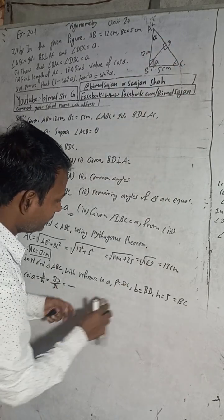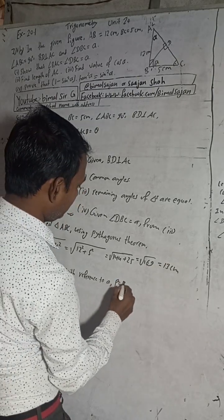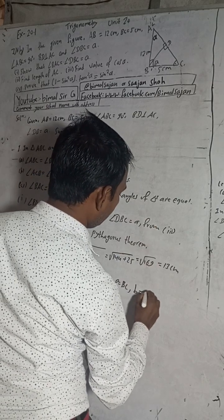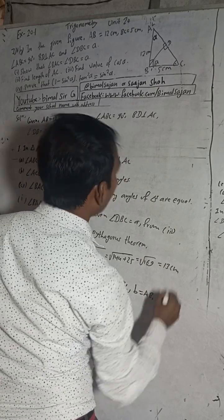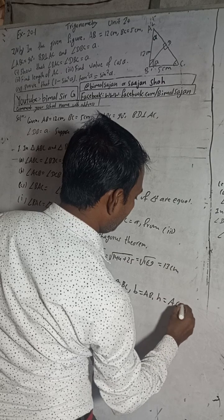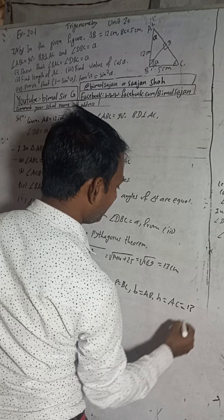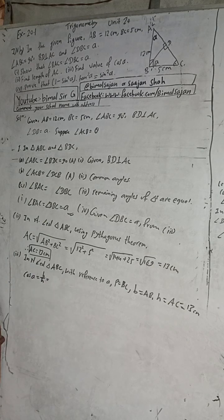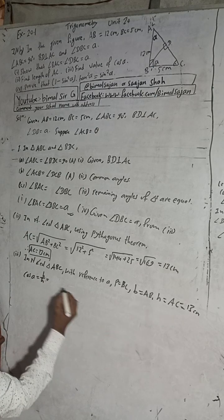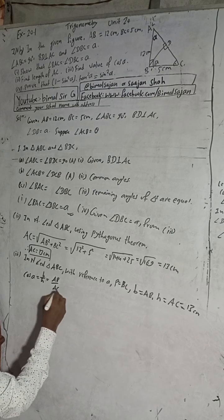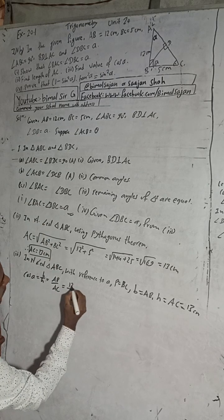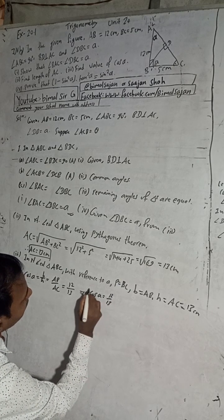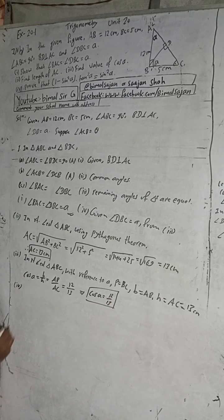With reference to alpha in triangle ABC: base is AB = 12, and hypotenuse is AC = 13. Using cos alpha = base/hypotenuse, cos alpha = AB/AC = 12/13. So cos alpha = 12/13 is our third answer.